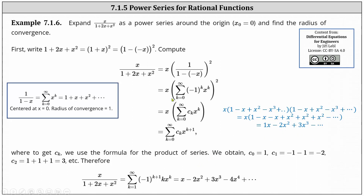And now we can write the power series for the given rational function. It makes sense to re-index the sum because the terms are 1x minus 2x squared plus 3x cubed minus 4x to the fourth, and so on. We'll start with k equals 1. We have the sum from k equals 1 to infinity, and the formula includes k times x to the power of k. Because the signs alternate, we also include negative 1 raised to the power of k plus 1. We use the exponent of k plus 1 because the first term is positive, and when k is 1 we have negative 1 squared, which results in a positive coefficient. When k is 2 we have negative 1 to the third power, which is negative, and the second term does have a negative coefficient. So the final result is x divided by the quantity 1 plus 2x plus x squared equals the sum from k equals 1 to infinity of negative 1 raised to the power of k plus 1 times k times x to the power of k.